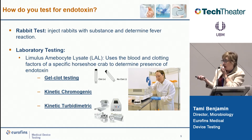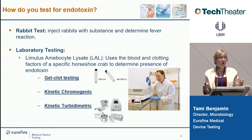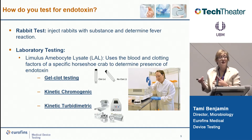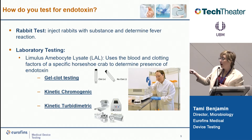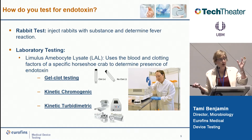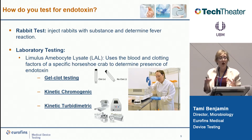Originally endotoxin was tested using a rabbit test — you would extract the device or pharmaceutical, inject it into a rabbit, and look for a fever response. Then someone realized we could use amoebocytes from the horseshoe crab to save the bunnies. LAL — limulus amoebocyte lysate — uses the amoebocytes from horseshoe crab blood and causes clotting to determine endotoxin. There are multiple methods: gel clot testing produces an actual clot in your tube; kinetic chromogenic turns a color based upon a time reaction; and kinetic turbidimetric obtains a specific turbidity over time.